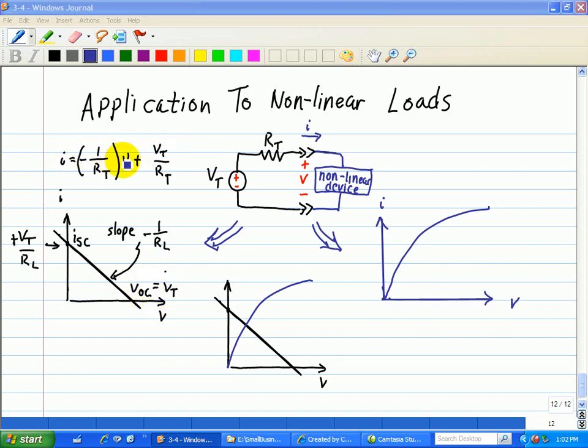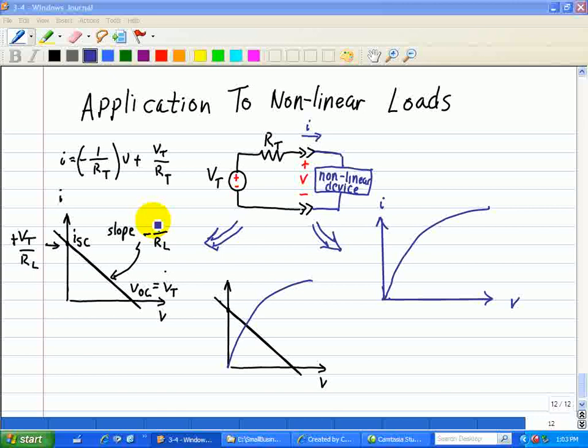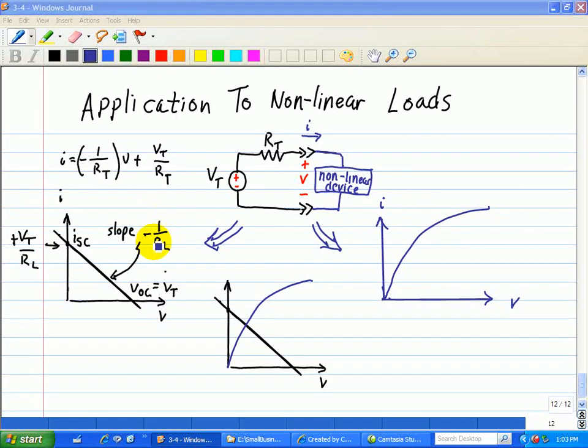And then when V equals zero, that's what we call the I short circuit current, and that's just Vt over RT. Here, this is known as the load line, and its slope is negative one over RL. So that's associated with the source circuit, shown here,